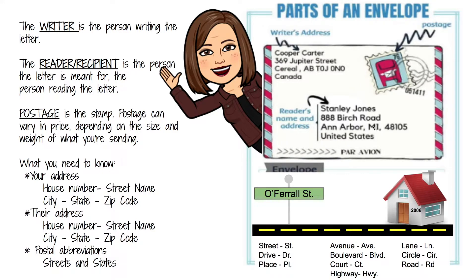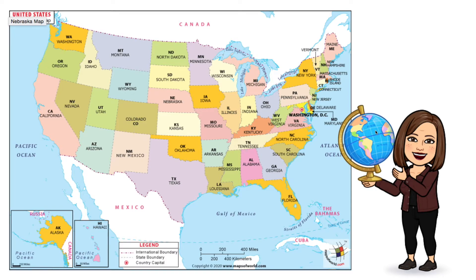Now I want you to look at this state abbreviation map. All of the different states have a two-letter abbreviation. What is the abbreviation for Mississippi? MS. Awesome, good job! If you look around this map you can see that there are all two-letter abbreviations, even for states with super long names like Mississippi and Pennsylvania, and even the little tiny states with short names like Ohio or Utah. It's still two letters whether it's a long state name or a short state name.